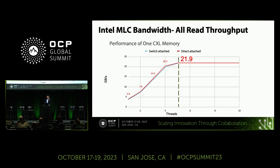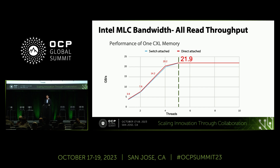For throughput, using five CPU threads, both direct-attach and switch-attached achieve 22 gigabytes per second. I know it's less than the expected 27 gigabytes per second, but again it's pre-production. For fewer than four threads, the difference is just 1%, which is negligible. So from a bandwidth perspective, direct-attached and switch-attached are almost the same. This was measured using an all-read-through MLNX test.